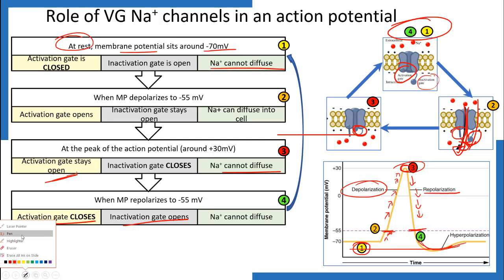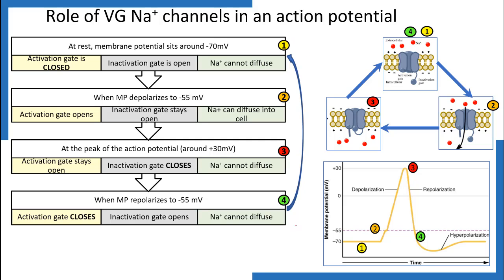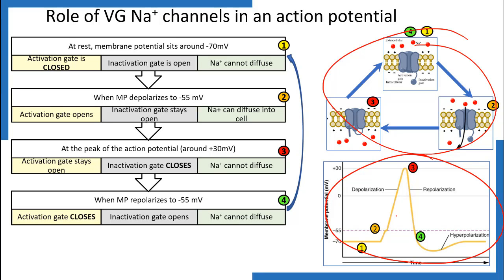Comparing the gate states with the action potential waveform: voltage-gated sodium channels are only open when the membrane potential is between minus 55 and positive 30, which is when sodium enters the cell — when both the activation and inactivation gates are open. At all other points, one or both gates are closed, preventing sodium from diffusing across.